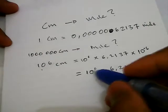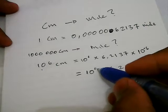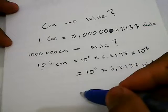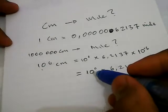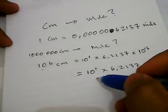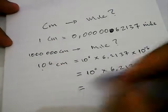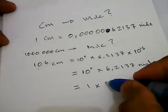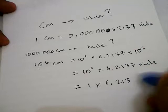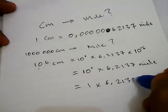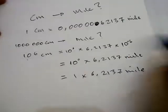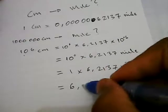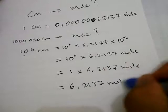Anything that has zero power is equal to 1 — for example, 1 power 0 equals 1, or 1 million power 0 equals 1. So it's actually 1 multiplied with 6.2137 miles, which equals 6.2137 miles. And that's it — that's the equation solved.